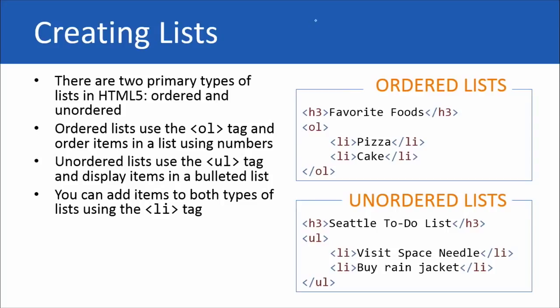All right. Next, we have an unordered list. The UL tag is used to display items in a bulleted list. Once again, we add items to that list using the list item tag, the LI tag. And so if I'm visiting Seattle, then I have a to-do list. I want to make sure that I visit the Space Needle and I also have to buy a rain jacket because everybody here thinks it rains. It's 80 degrees outside right now. It's nice.